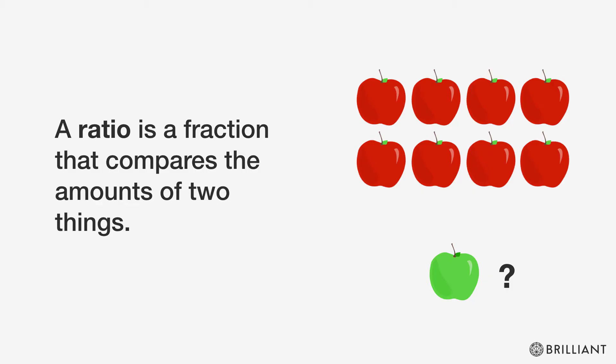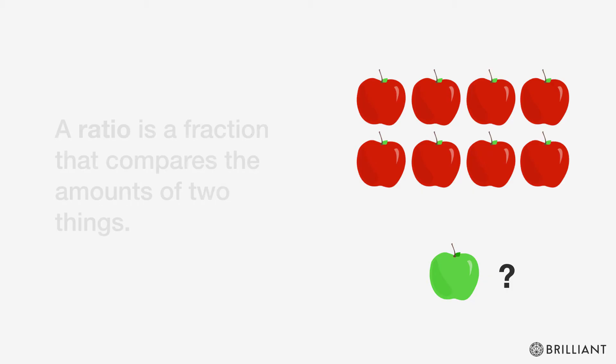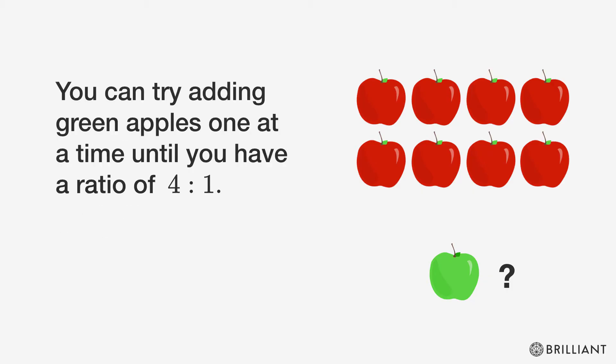A ratio is a fraction that compares the amounts of two things. You can try adding green apples one at a time until you have a ratio of 4 to 1.